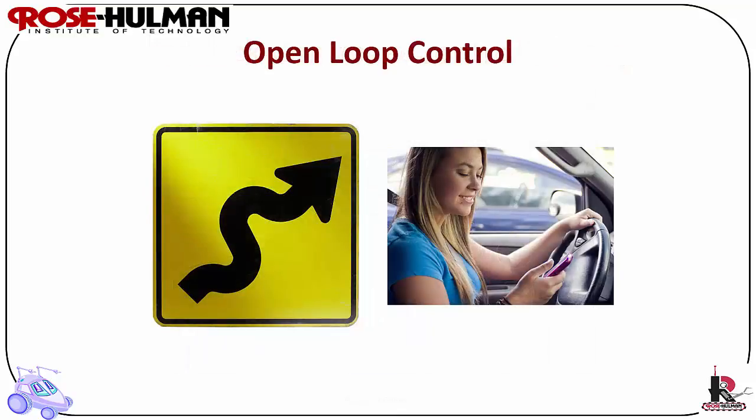Open-loop control does not use sensory feedback, such as what's shown by this driver texting instead of looking at the road. In feedforward control, the command signal is a function of some parameters measured in advance. It's effective only if they are well calibrated, such as the plant has a very well-defined model and the environment is predictable and does not change.